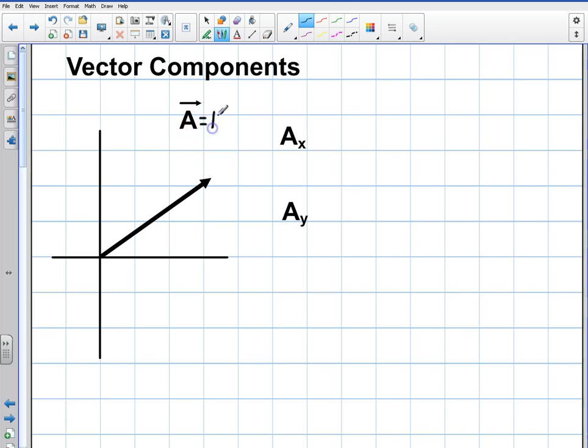So I'm going to give you a simple vector here. I'm going to give you a vector, let's say this is vector A, and let's say that this is 100 meters. Okay, so for example, this vector here, the magnitude is 100 meters, and let's say that I'm going to give you an angle here of 30 degrees.